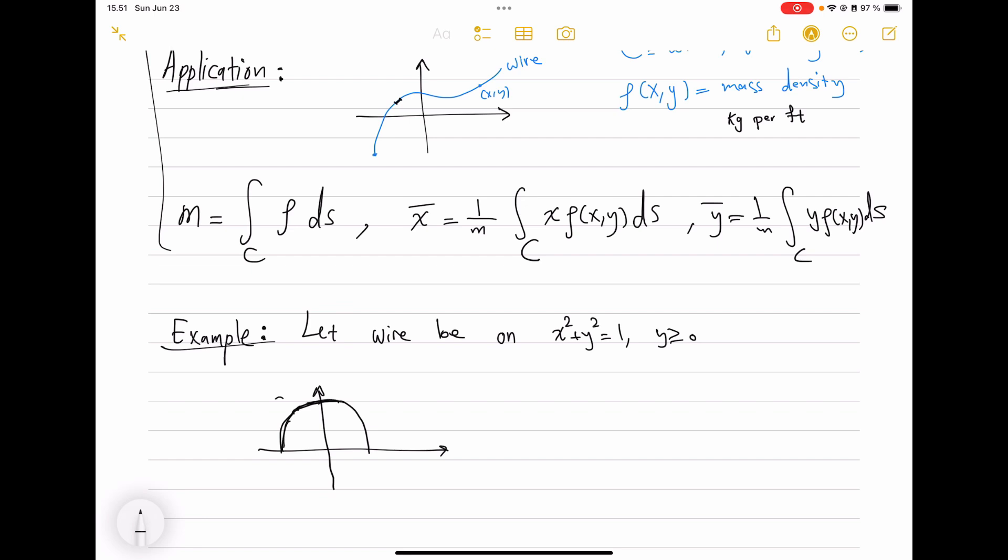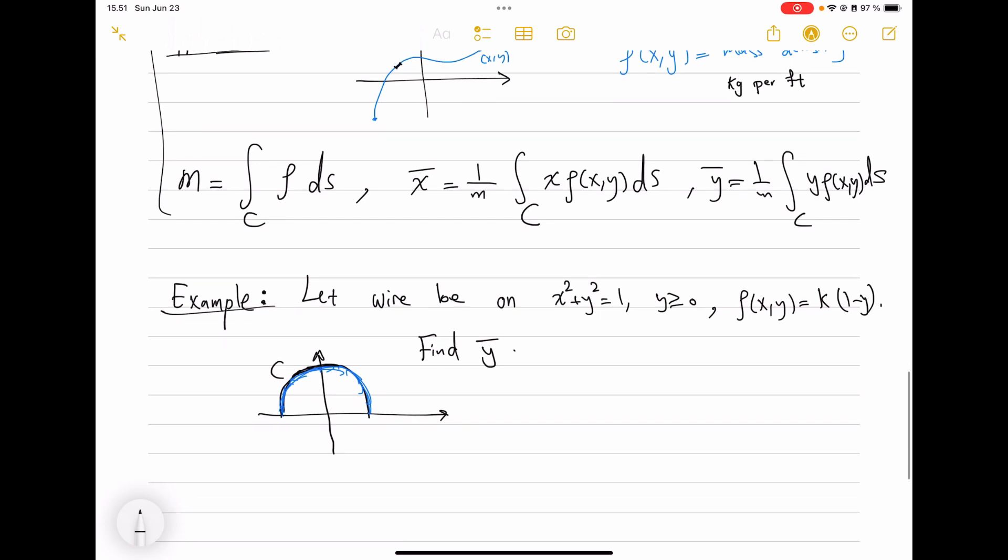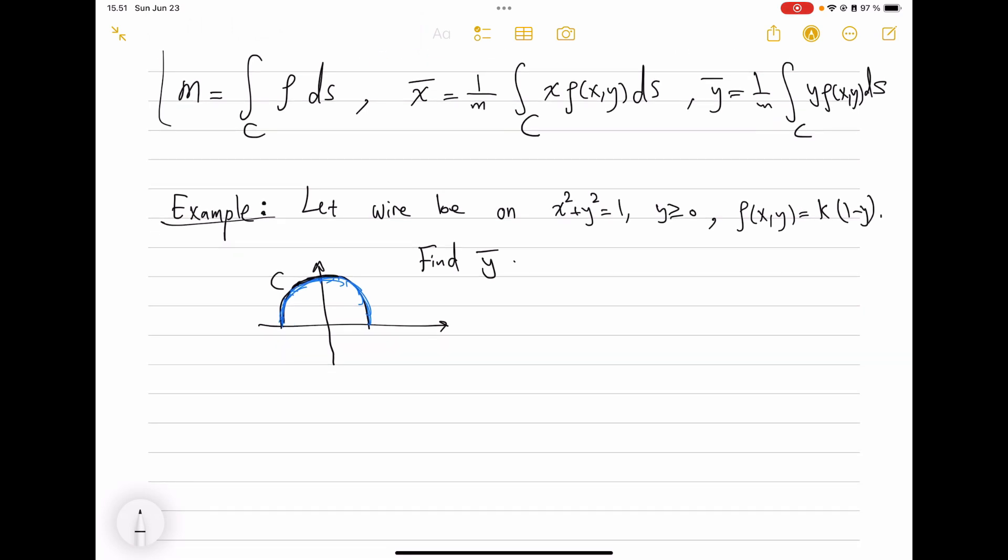So that will be the application. The calculations are often simple, so I'm not gonna write specific examples about this. Actually, I have one, sorry. I want to—this is not really an example to illustrate the center of mass part, but also illustrate how these line integrals are calculated. Let the wire be on x² + y² = 1 and y positive.